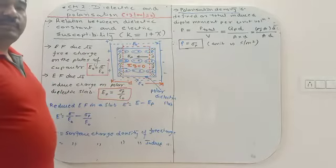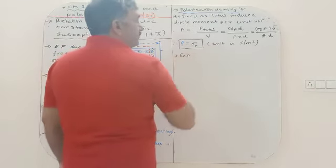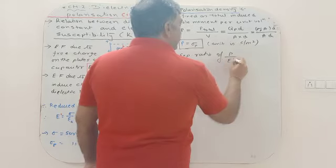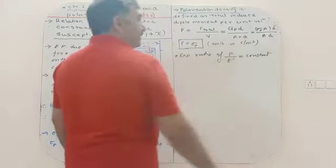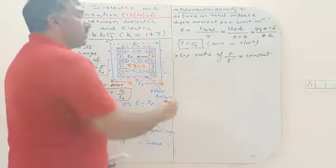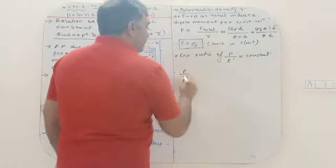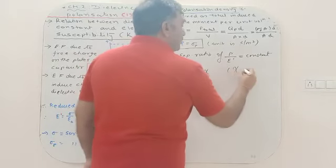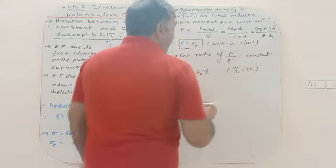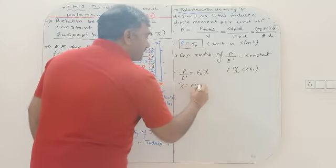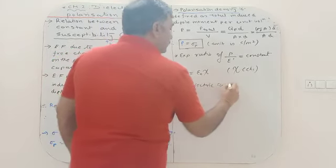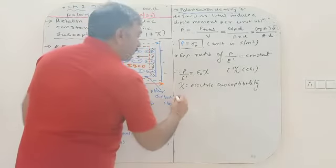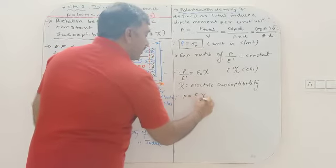Experimentally it is found that the ratio of P to E' (the reduced electric field) remains constant. This constant is represented by ε₀χₑ, and χₑ is called electric susceptibility. Therefore we can write P = ε₀χₑ E'.